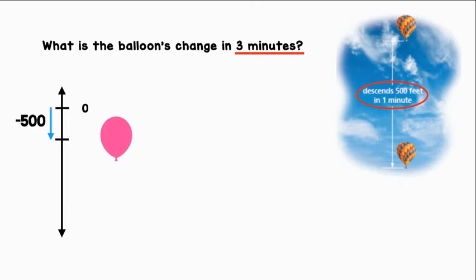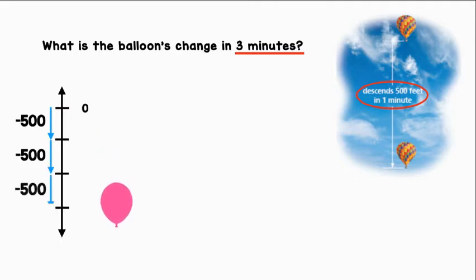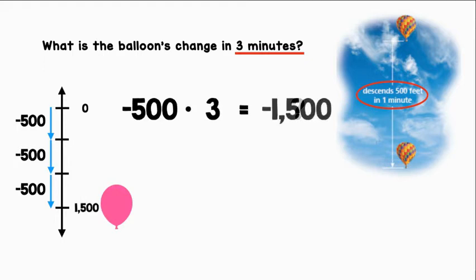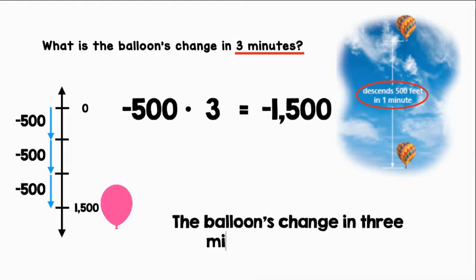So the balloon goes down 500 feet in the first minute, down another 500 in the second minute, and down another 500 feet in the third minute. We can represent this as negative 500 times three, which gives us negative 1,500. The balloon's change in three minutes is negative 1,500 feet.